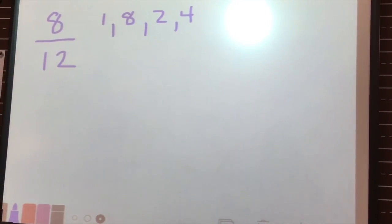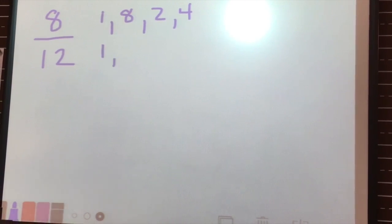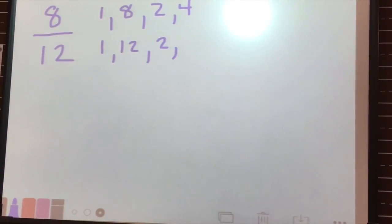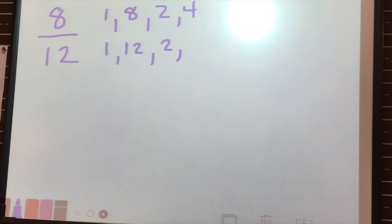For twelve, I repeat the same process. I do one and twelve, one in the number. Since it's an even number, I know two is going to be a factor. So two, and what times two is twelve? It's six, so two and six.